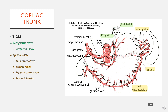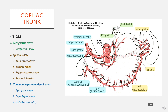The next branch is the splenic artery, which comes off the celiac trunk and travels behind the stomach, just above the pancreas. As it goes along, it gives off several branches: the short gastric branches, posterior gastric branches which aren't depicted here, and the left gastroepiploic artery, which comes around the greater curvature and supplies it.